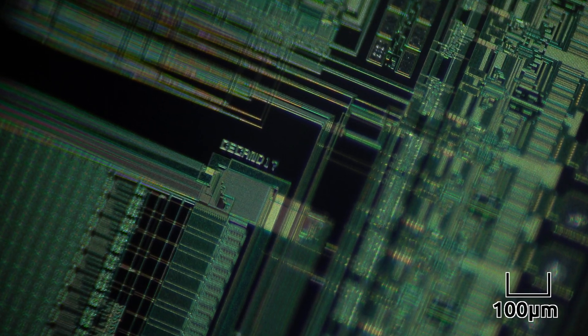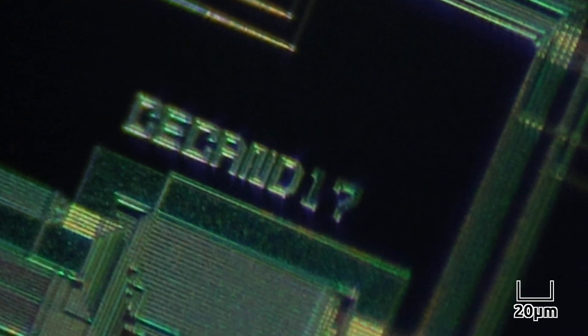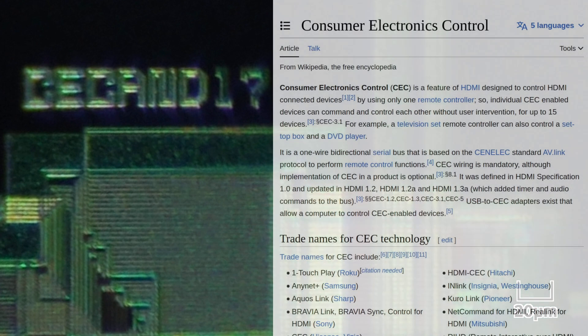Here you can see a model number on the chip. It says CECAND17. The letters CEC could possibly stand for Consumer Electronics Control,